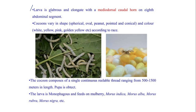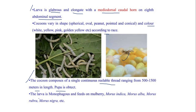The larvae of the mulberry silkworm is glabrous, meaning without hair, along with a mid-dorsal caudal horn on the eighth abdominal segment. Cocoons vary in shape and color according to the race. The cocoon is composed of a single continuous silk thread ranging from 500 to 1500 meters in length, and the pupa is obtect type.